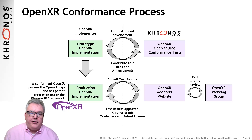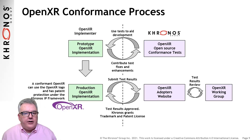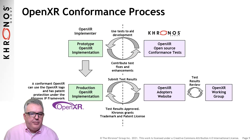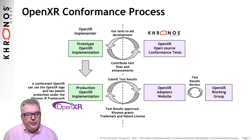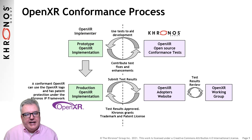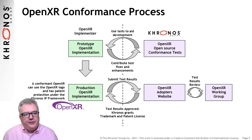Alongside the OpenXR 1.0 specification, the Kronos OpenXR conformance test suite is open source and free for anyone developing an OpenXR implementation. The Kronos OpenXR adopters program enables OpenXR implementations to become officially conformant by submitting conformance test results for working group review. Conformant implementations can use the OpenXR logo and trademark and are protected by the Kronos IP framework. For developers, this ensures consistent implementation quality and application portability across the multiple OpenXR implementations rolling out from vendors across the industry.